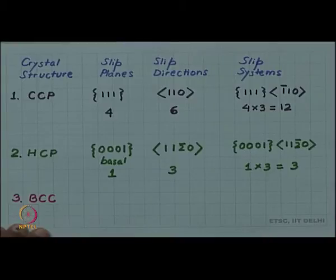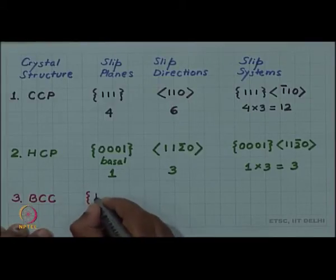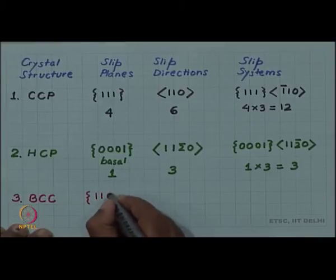Finally, if you look at BCC, in the BCC there is actually no close-pack plane. So the nearest close-pack plane is {110}.